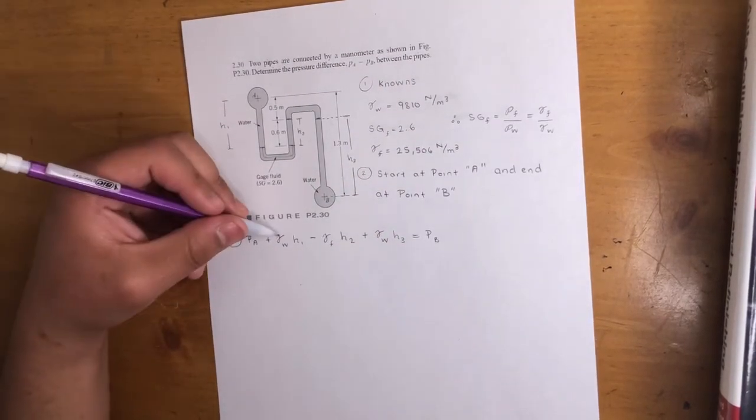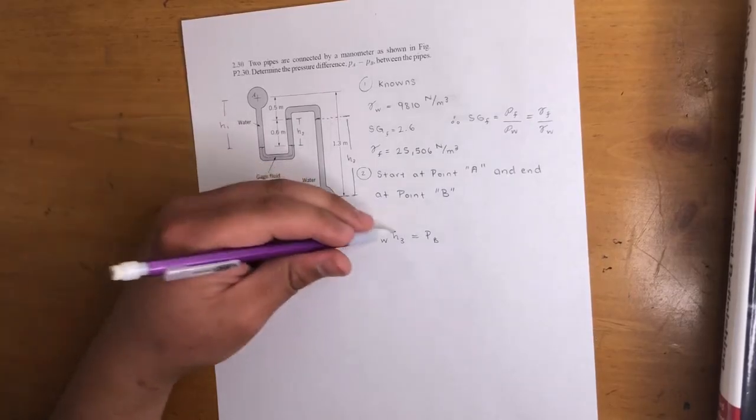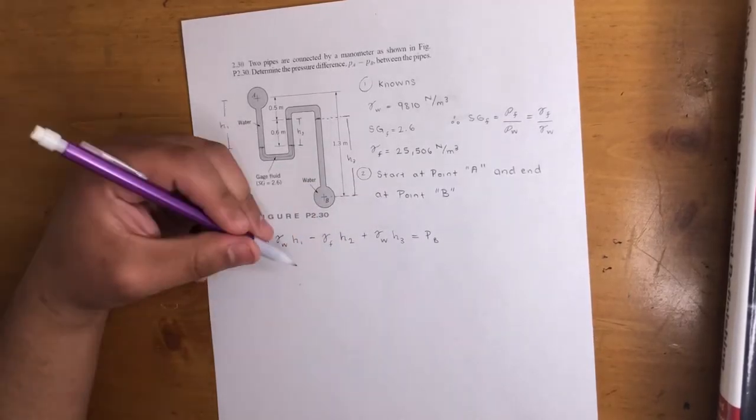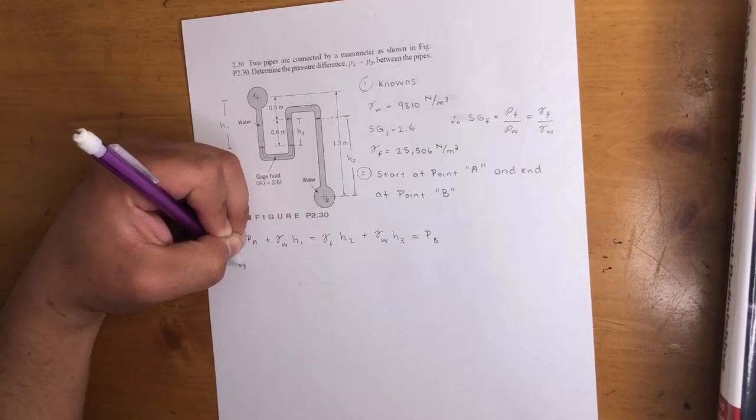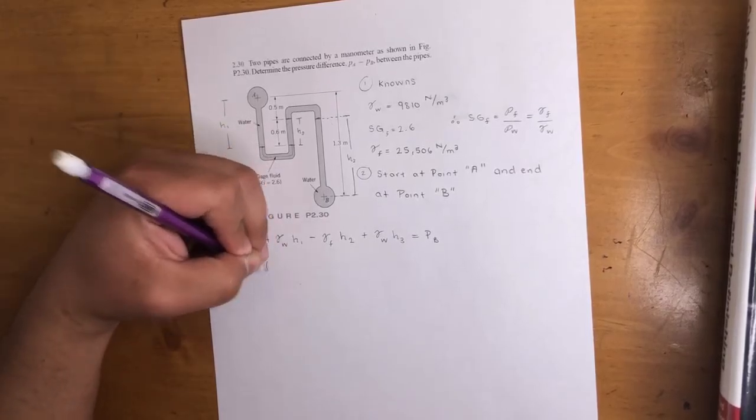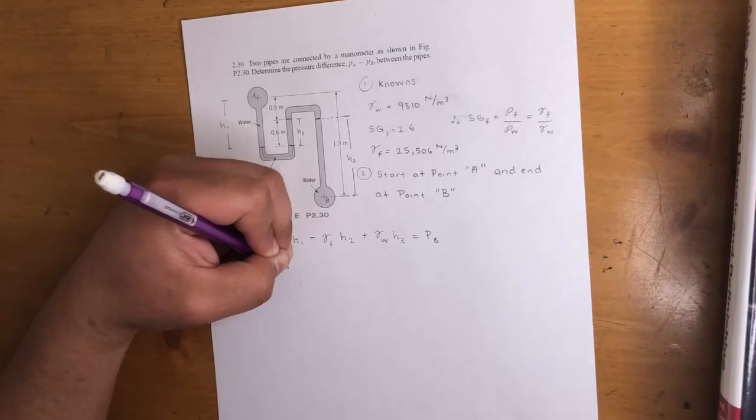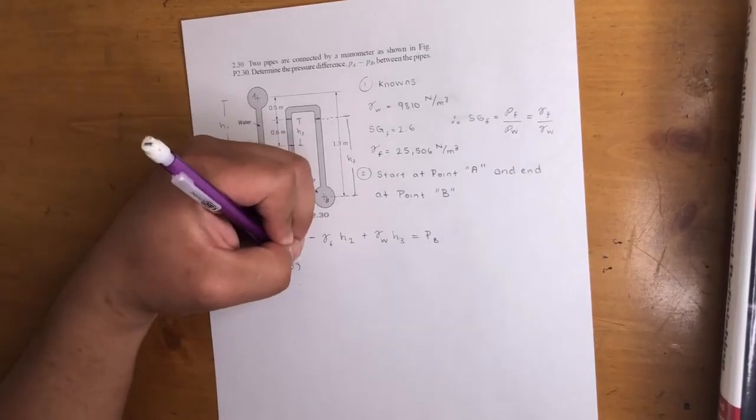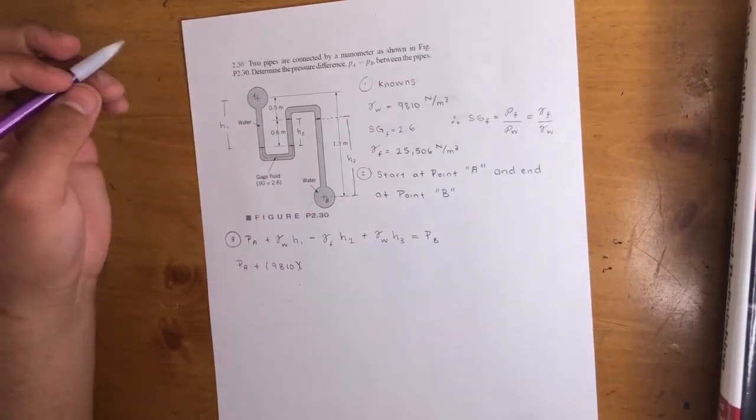So we know our gamma of water, height one, height two, height three, gamma of fluid. It should be a plug and chug.